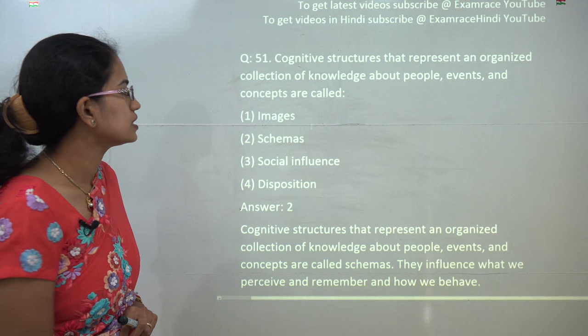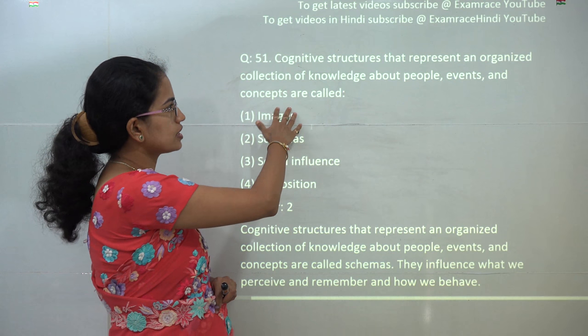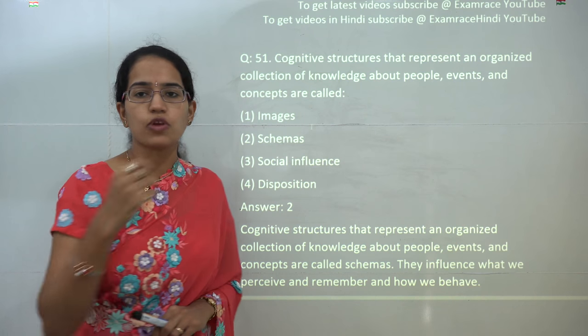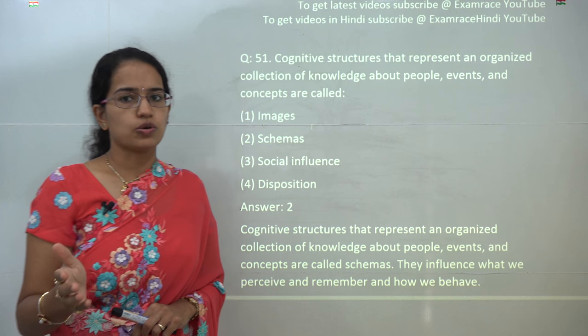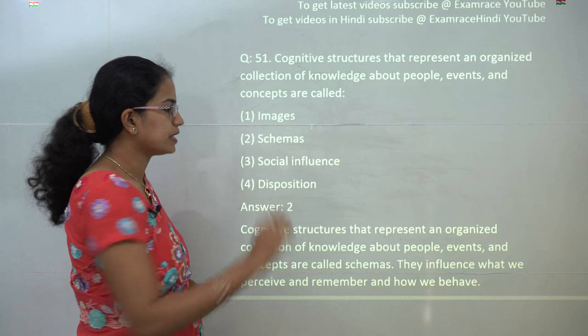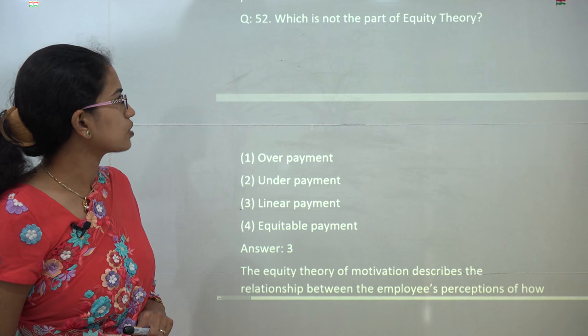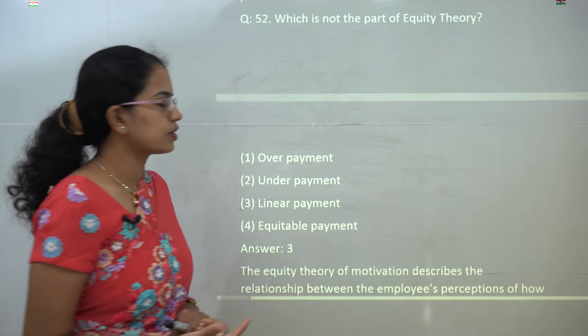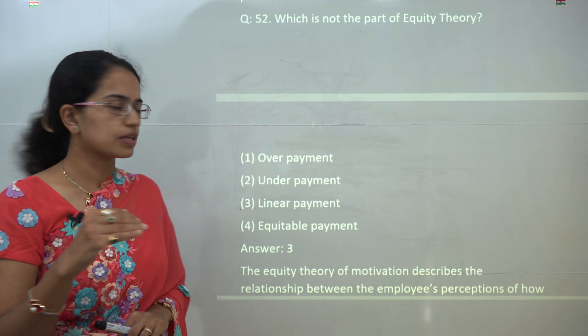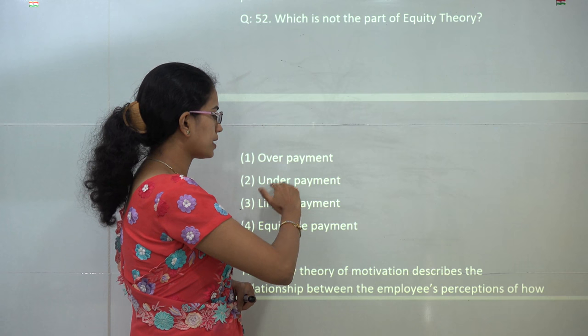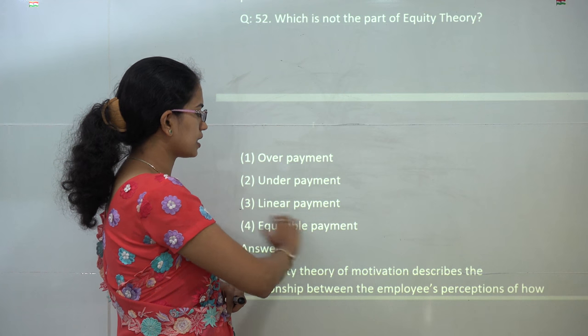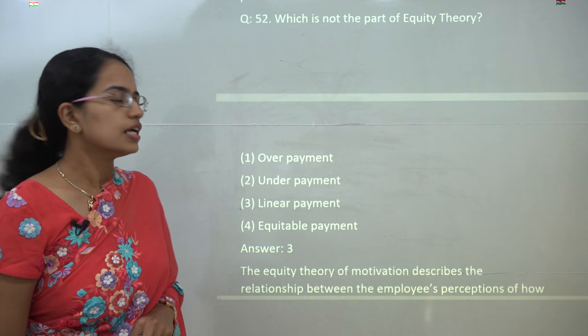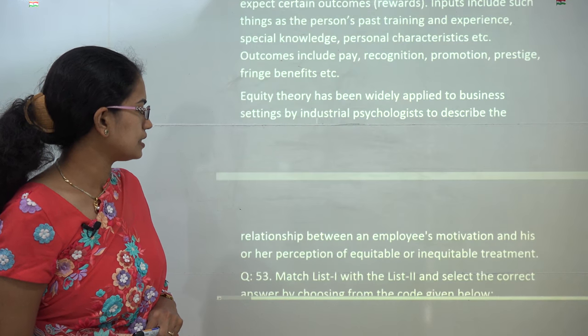Now coming on to the first question, schema explains the cognitive structure which represents an organized collection of knowledge about people, events, and so on. So the correct answer here would be schema. The next question talks about which is not a part of the equity theory. Now equity theory of motivation talks about equitable aspects—equitable payment, overpayment, and underpayment, all of these are correct. The only incorrect option here is linear payment, so the answer would be linear payment.